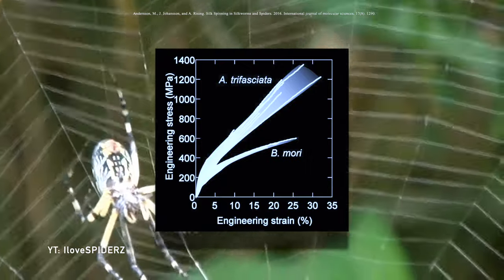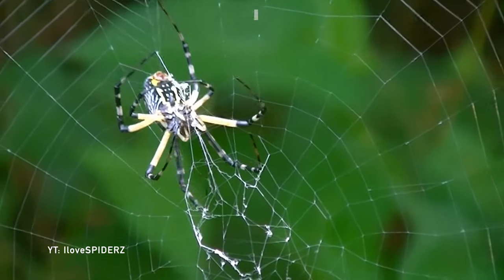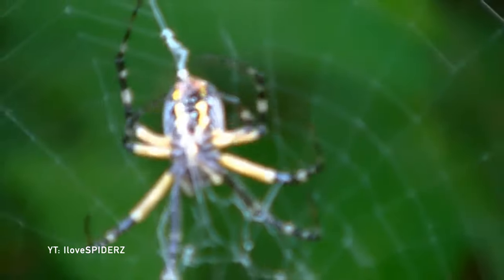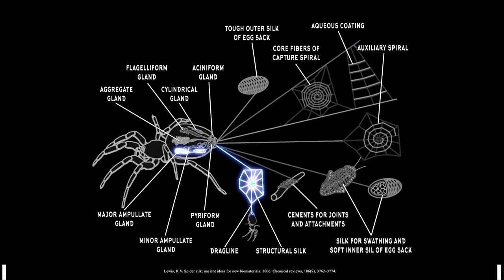Spiders are more advanced than silkworms in more ways as well. While silkworms only produce one kind of silk, orb-weaving spiders have seven different types of silk glands.